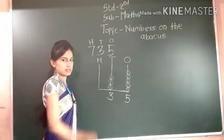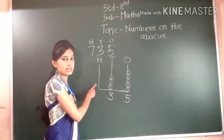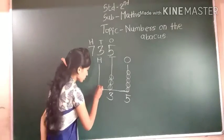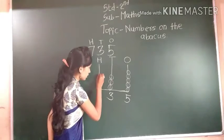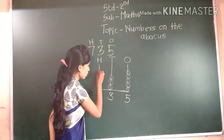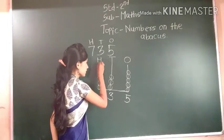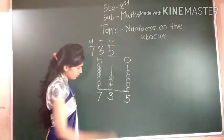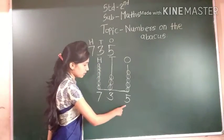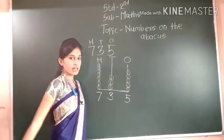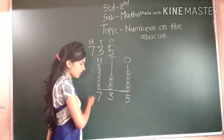700. So we have to draw 7 beads at 100's place: 1, 2, 3, 4, 5, 6, 7. And we write here 7. So 735 — 5 ones, 3 tens, 700.